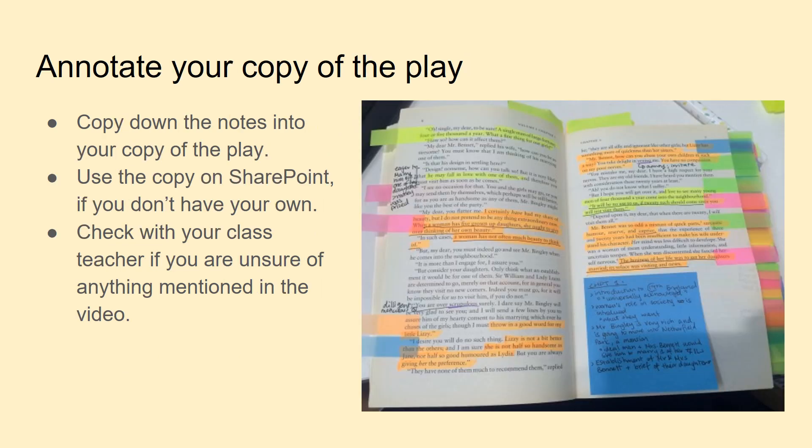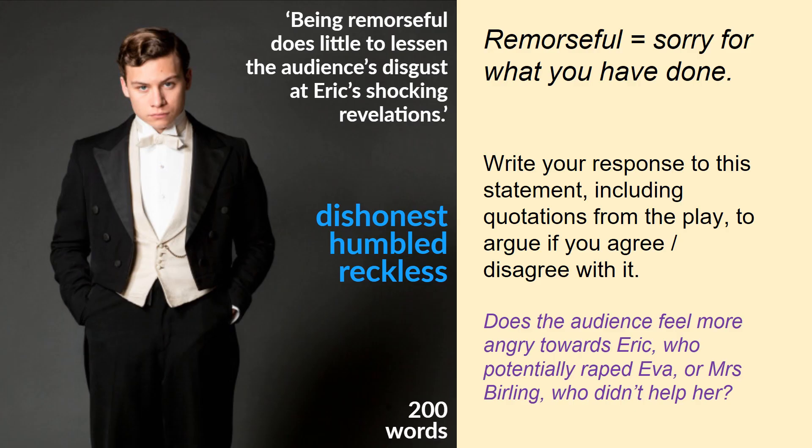What we're going to do now is annotate your copy of the play. We are starting from the beginning of Act Three and annotating pages 50 to 55 in today's lesson. You will need your copy of the play, a highlighter and a pen. Remember to check with your class teacher if you're unsure of anything mentioned in the video.